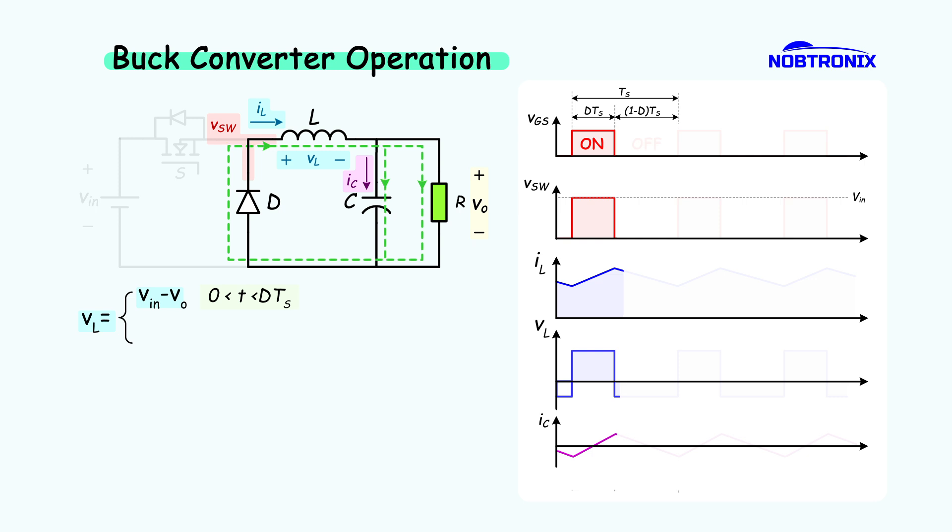When the switch turns off, the inductor keeps pushing current through the diode. The voltage at the switch node drops to zero, and the inductor now sees a voltage equal to the negative of the output voltage. It starts releasing its energy to the output, and its current drops linearly.